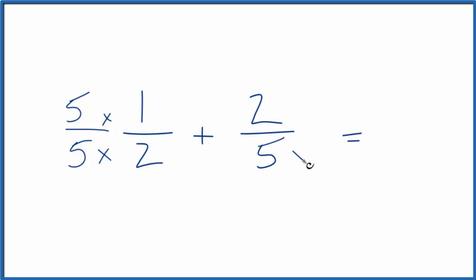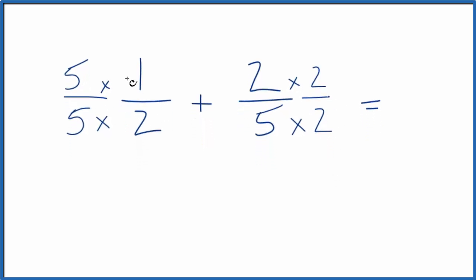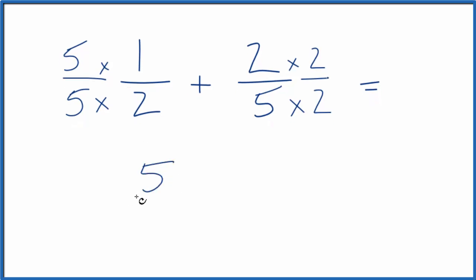Over here I could multiply 5 times 2, that would give me 10, but I also need to multiply the top by 2. So now 5 times 1, that's 5, and then 5 times 2, that's 10. So I have my 10 on the bottom here, plus 2 times 2 is 4 and 5 times 2 is 10.